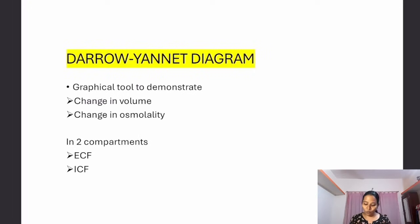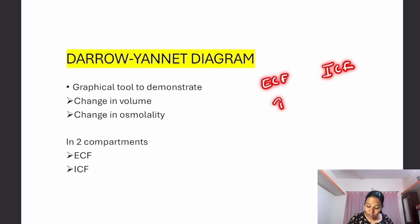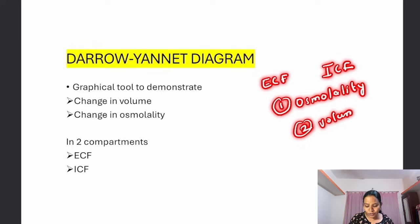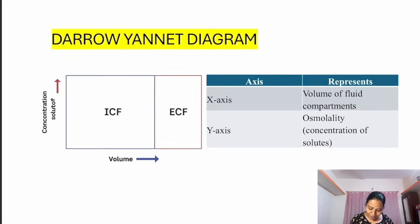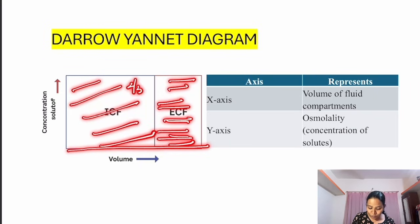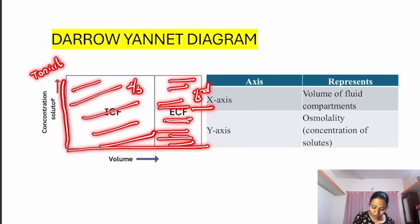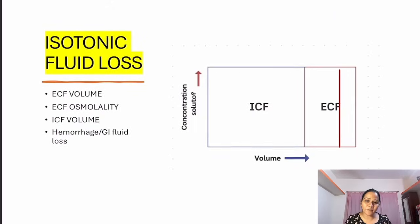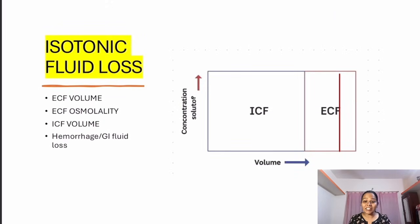The Darrow-Yannet Diagram is a graphical tool — a graph which depicts two things happening in the extracellular fluid compartment and intracellular fluid compartment. It assesses osmolality and volume, because fluid has only these two things. On the graph, the x-axis represents the volume of the fluid compartment. The outside (extracellular) forms one-third and the inside (intracellular) forms two-thirds, as discussed earlier. The y-axis represents tonicity or osmolality of these fluids.